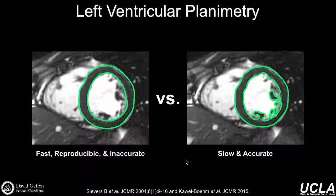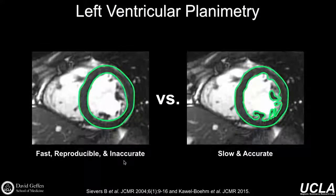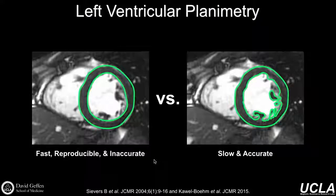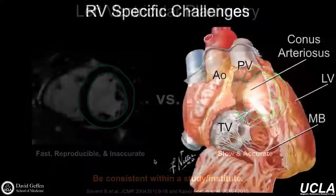One real challenge to consider at your institute is whether, when contouring the endocardium, you're going to include the papillary muscles and trabecula in the blood pool, or take a more detailed approach and trace around the papillary and trabecular muscle tissue to include it in the LV mass itself. The simple approach is fast and reproducible, but inaccurate because you're calling muscle blood. The detailed approach is accurate but more time consuming. Most sites default to the faster approach — mostly because time is money — and if you're consistent within an institute, that's the most important thing for interpreting your studies.